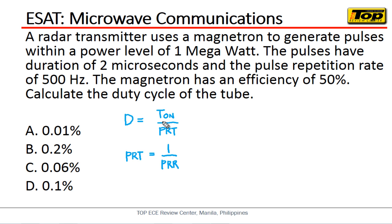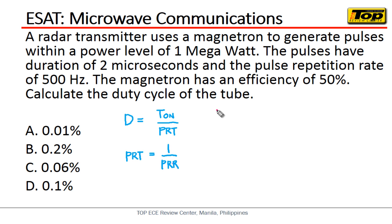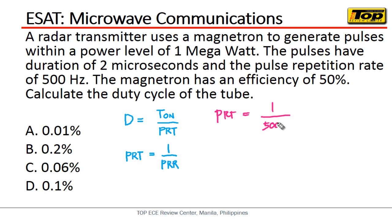We don't have the pulse repetition time directly, but the pulse repetition rate is the reciprocal of the pulse repetition time, and that is given as 500 hertz. So we can solve for the PRT: PRT is simply one over 500 hertz, which equals two milliseconds.